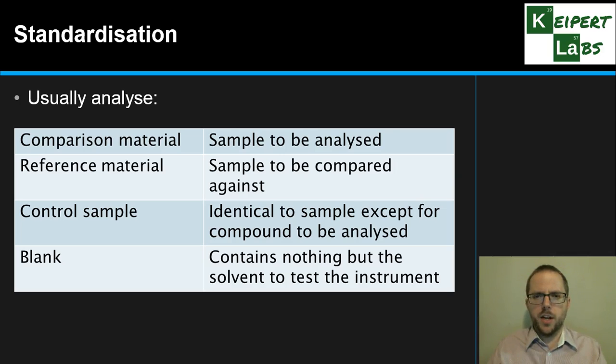And so this is typically how we might structure our analysis. Looking at our comparison material - what we're actually trying to analyze - the reference material that we're comparing it against. And then two things that are also really important to check the validity of our procedure: a control sample, which is identical to the sample we're testing, except for the compound we're looking for. This is especially important in biological samples, which may be very complex. So if you're testing a urine sample for the presence of doping in sport, you're going to be comparing a blank urine sample which contains all the other things that urine does, except for the compound that we're trying to find. Or maybe it's a blood sample that doesn't contain any alcohol that we're comparing against a sample that we suspect to have a certain amount of alcohol in it.